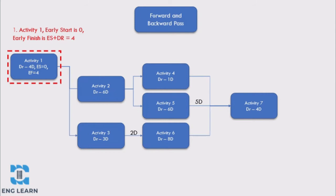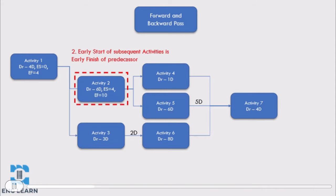The network has seven different activities linked with finish-to-start predecessor relationships, and lags between activity 3 and activity 6, and activity 5 and activity 7. Starting with the forward pass, we start at activity 1. As it is the first activity, the early start date for activity 1 is 0, and the early finish date is the early start plus the activity duration, which is 4 days — so the early finish is day 4. For activity 2, the early start is the early finish of its predecessor, activity 1. The duration is 6 days, so the early finish is day 10.